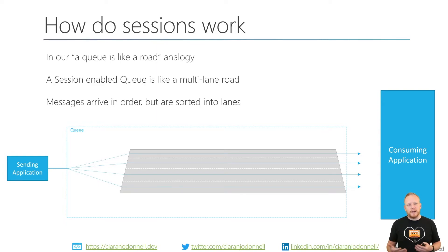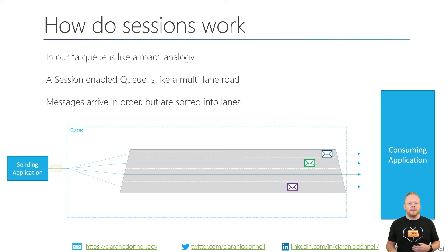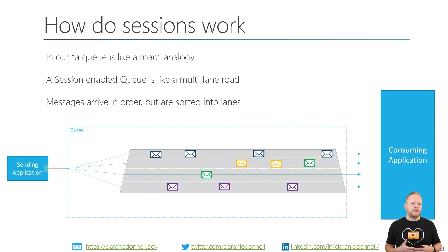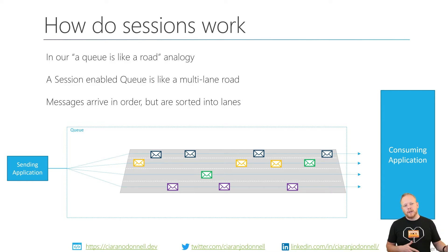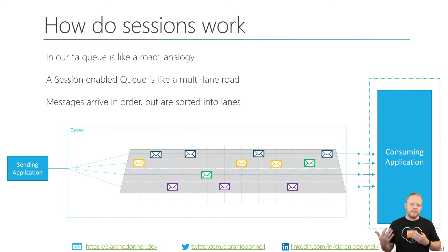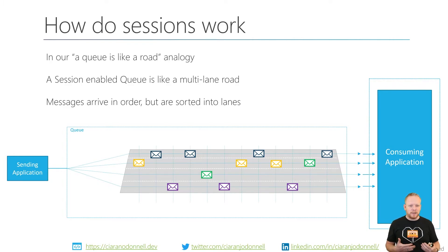Taking our analogy where a queue is like a road and everybody queues up, a session-enabled queue is like a multi-lane road. As messages arrive, they maintain their order but they're sorted into lanes. This enables us to read from a specific message session to get the messages in that session in order. If we have one consuming application and it doesn't specify sessions or cap the number of sessions it's listening to, it'll listen to all of them and it'll effectively work like a non-session-enabled queue.